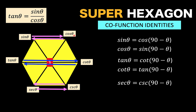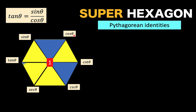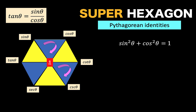One more pair of co-function identities: secant theta equals cosecant of 90 minus theta, and cosecant theta equals secant of 90 minus theta — another six identities added. Now let's look at the Pythagorean identities. Highlighting three triangles and rotating clockwise from sine to cosine to one gives: sine squared theta plus cosine squared theta equals one. Continuing clockwise: one plus cotangent squared theta equals cosecant squared theta, and tangent squared theta plus one equals secant squared theta.